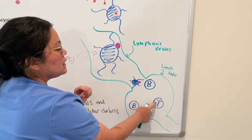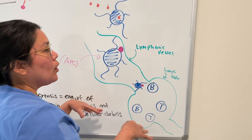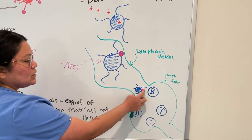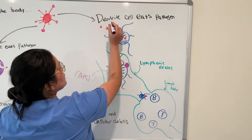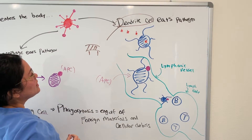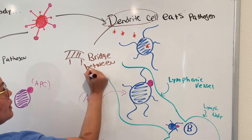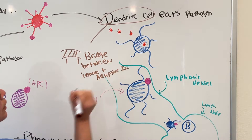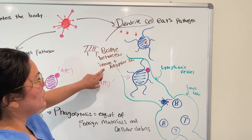The dendritic cell is going to travel around the lymphatic system and it's going to touch and rub on each B cell and T cell and show them the antigen. If the B or T cell recognizes this antigen, it's going to be activated and it's going to clone itself and make more B or T cells — creating a little army to fight against the antigen or pathogen. They call the dendritic cell a bridge between innate and adaptive immunity.